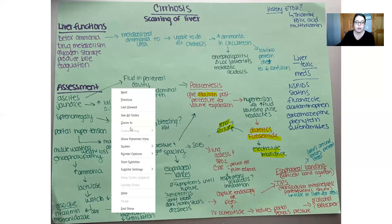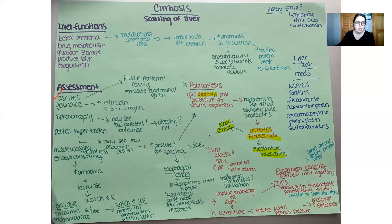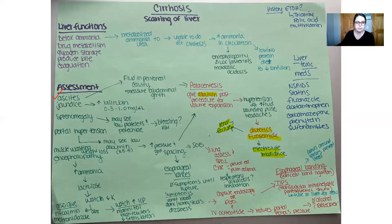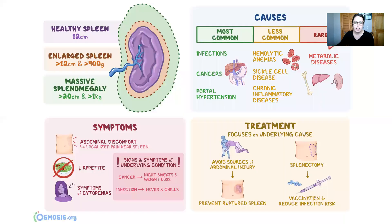Now let's talk about jaundice — yellowing of the skin. You're also going to see yellowing of the sclera, the whites of the eyes, and sometimes in the oral mucosa. Jaundice is typically due to a high bilirubin level; normal is 0.3 to 1.0. Anything over 15 to 20 is when it starts to become a concern — bilirubin of 20 or higher is when you'll actually start seeing that jaundice.